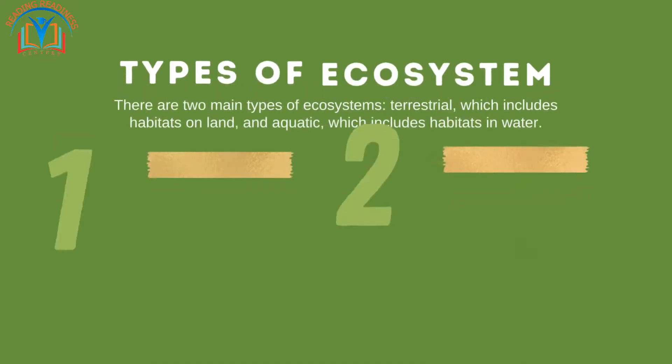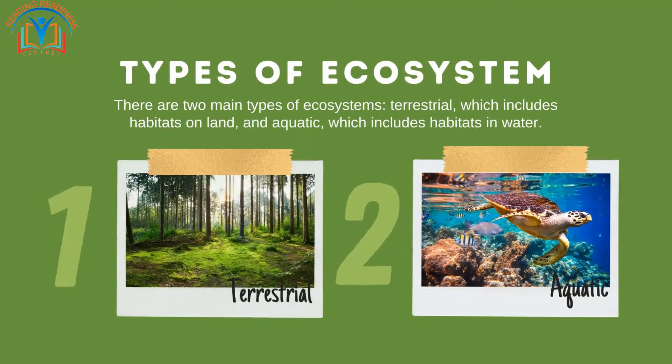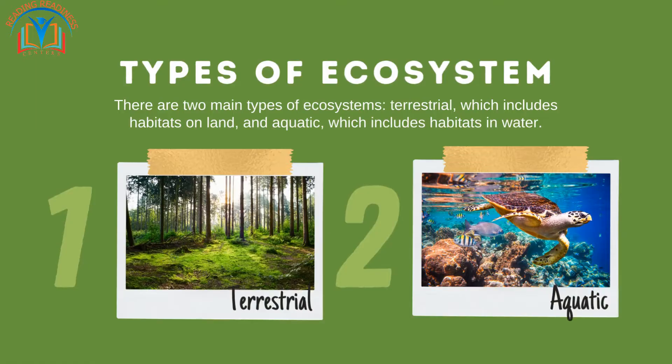There are two main types of ecosystems: terrestrial, which includes habitats on land, and aquatic, which includes habitats in water.